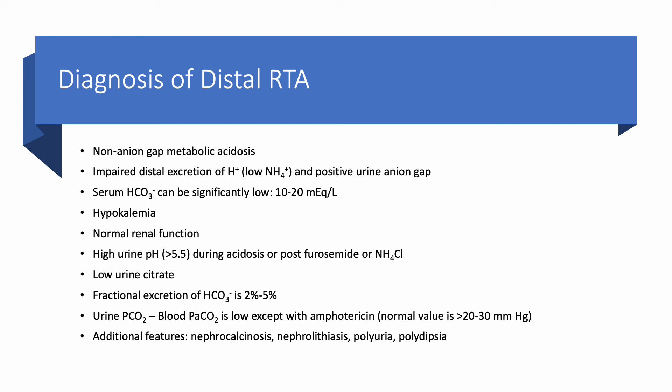In both proximal and distal RTA, you have hypokalemia. Renal function is usually normal. Urine pH is high — above 5.5 — even when the patient is acidotic, even if you challenge them with an acid load or do the furosemide test. They cannot acidify the urine; urine pH remains above 5.5. Low urine citrate, combined with a positive urine anion gap, is very helpful for diagnosis. Fractional excretion of bicarbonate is 2 to 5%, so bicarbonate reabsorption is not the primary problem — it is in proximal RTA. The urine PCO2 minus blood PaCO2 is low in distal RTA, except with amphotericin where it can be normal. The normal value is above 20 to 30 mmHg, and it is normal in proximal but low in distal RTA.